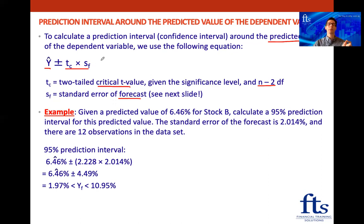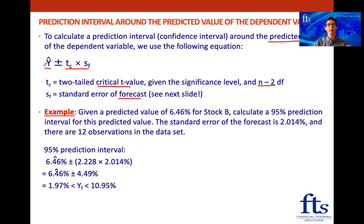Just before the example — remember when we did confidence intervals in the sampling and estimation reading, we looked at the confidence interval for the population mean. We had the sample mean as our point estimate, then built a confidence interval around it using a critical t-value — called the reliability factor — multiplied by the standard error. This prediction interval follows the exact same principle.